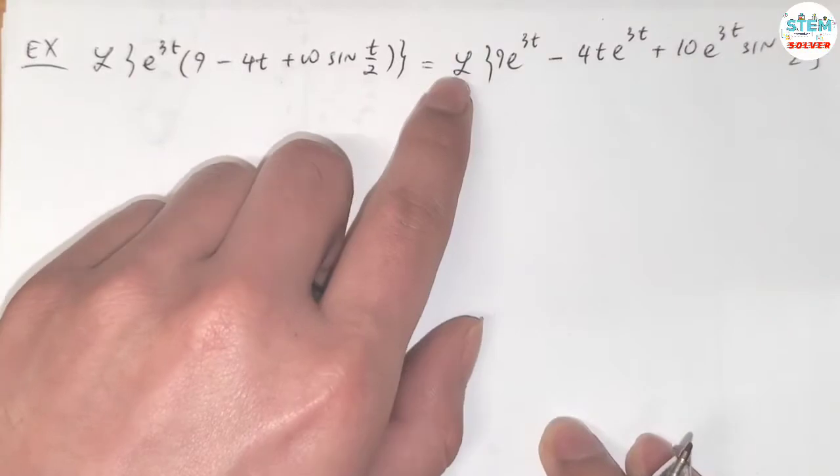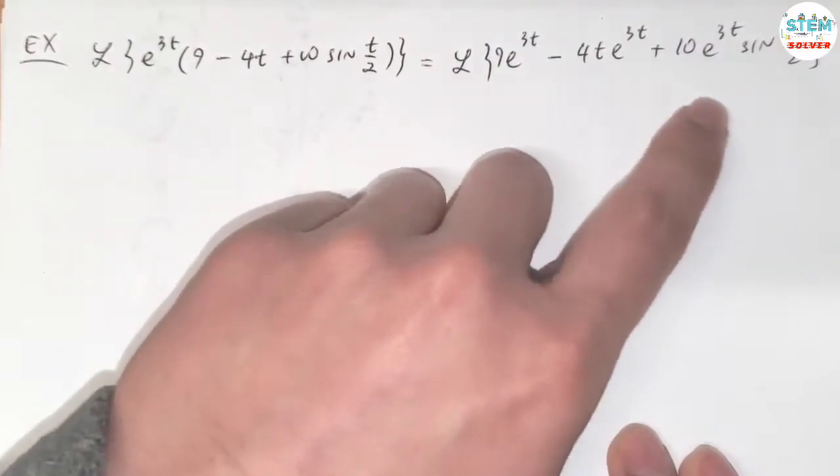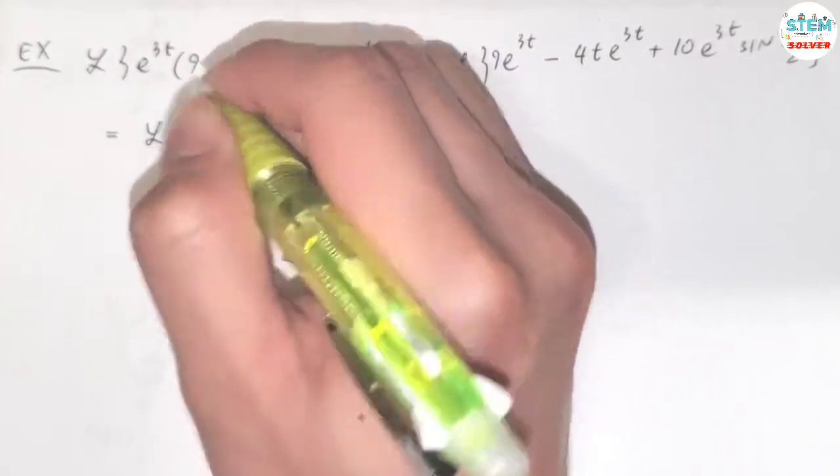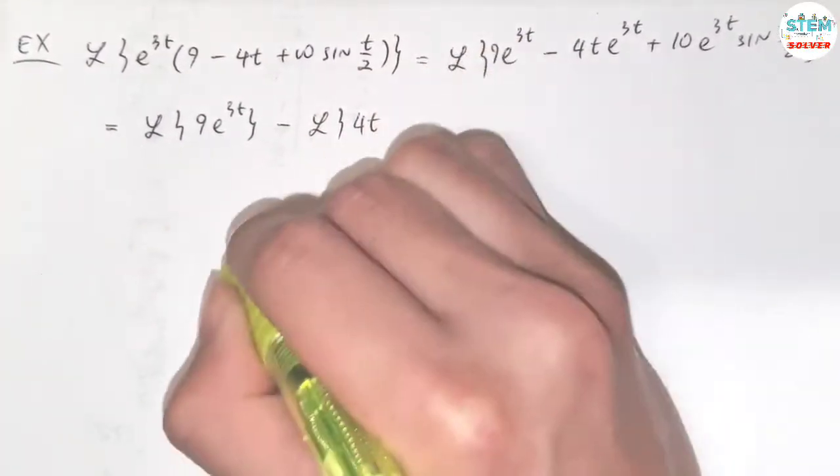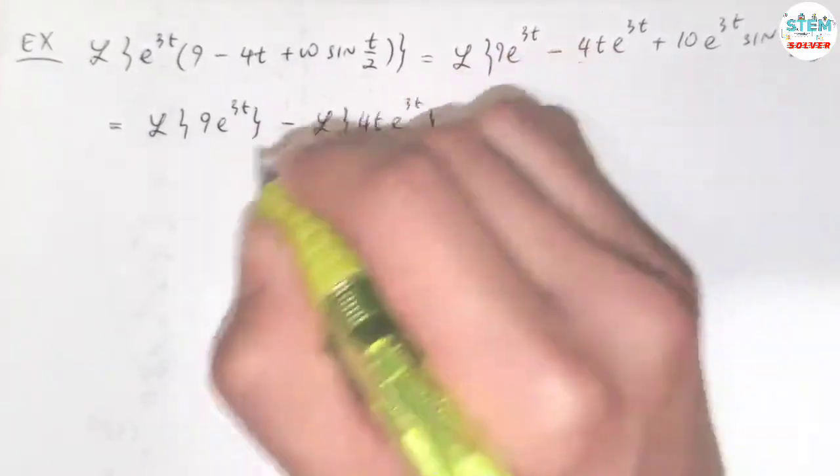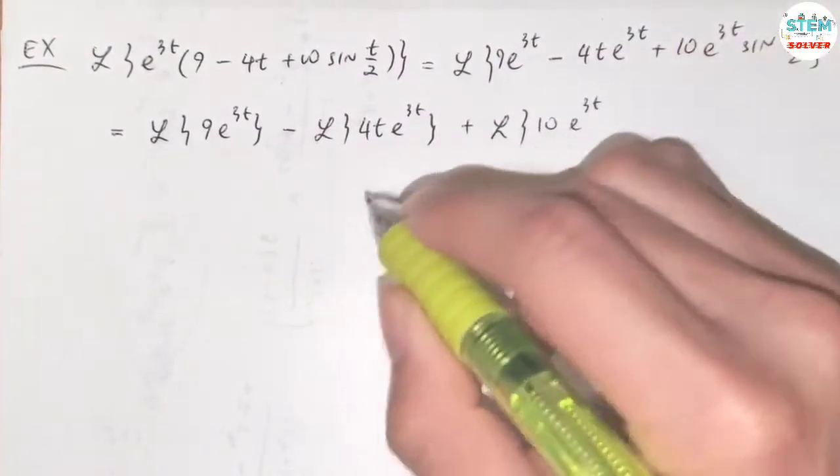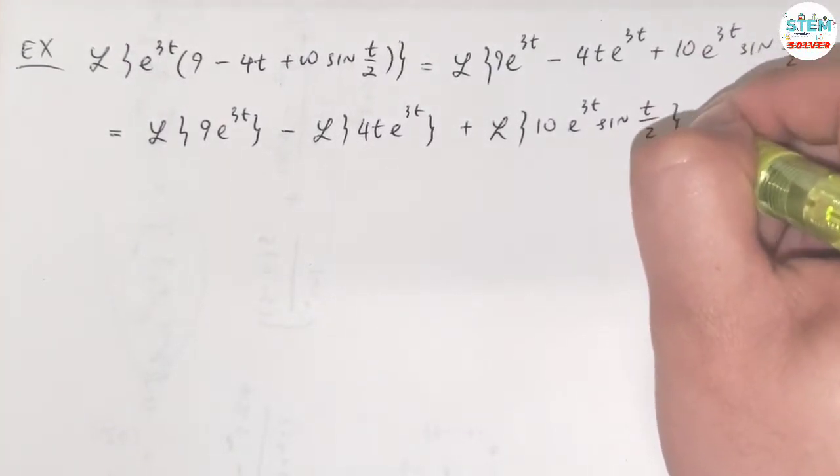Now I'm going to apply the L to every single term inside here. So I have L of 9e to the 3t minus L of 4t e to the 3t plus L of 10e to the 3t times sine t over 2.